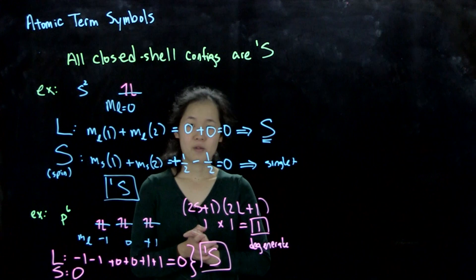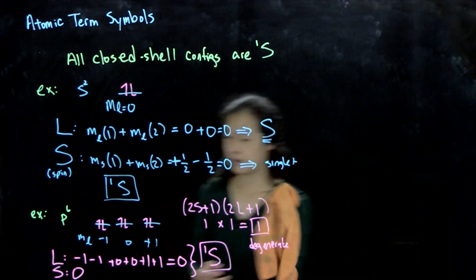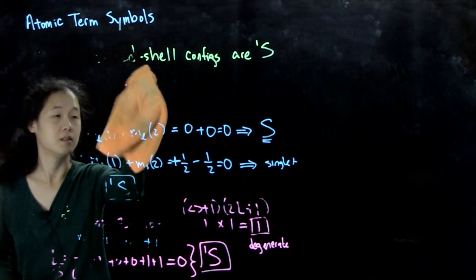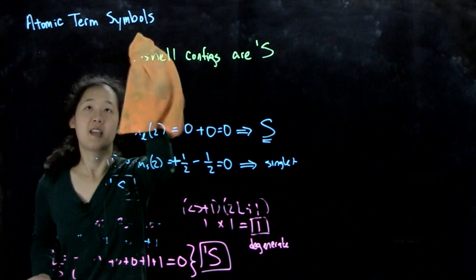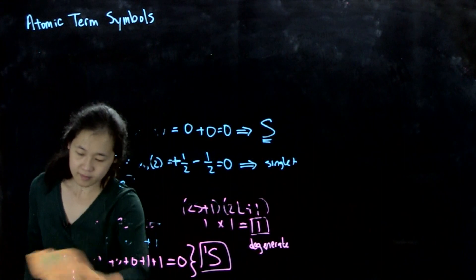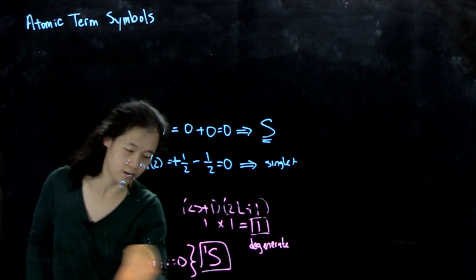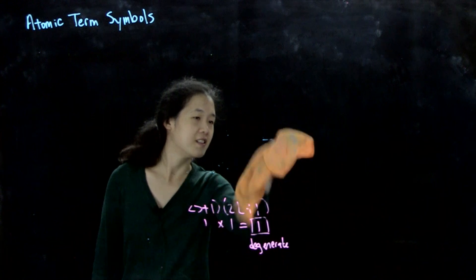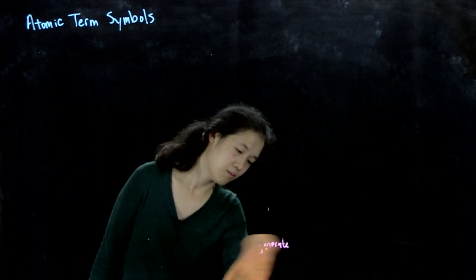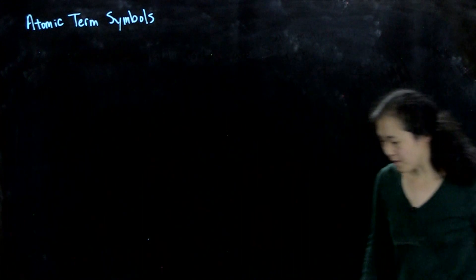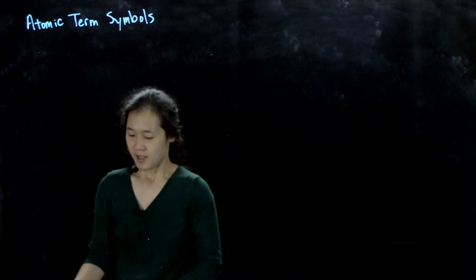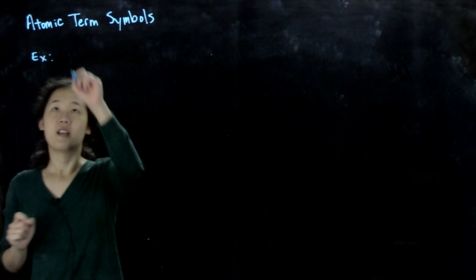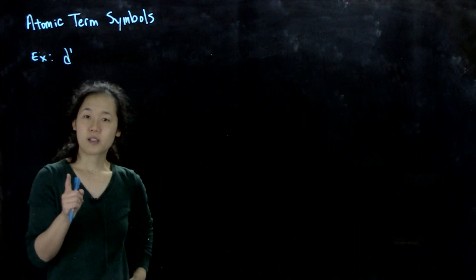Now let's do a more complicated example. What happens if we're no longer in a closed-shell system? Then there are multiple ways of populating our orbitals. Let's keep it simple and start with just one electron. Suppose our electron configuration is d¹ — we have one electron in our d orbitals.